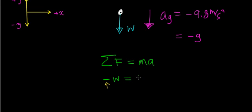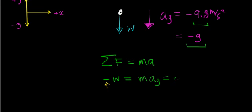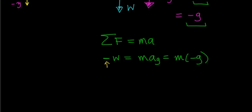This force equals the mass of the object times the acceleration due to gravity. We said the acceleration due to gravity is negative 9.8 meters per second squared, or negative g, so I can rewrite this as mass times negative g. Summarizing these two terms: the weight force is in the downward direction and equals mass times the acceleration due to gravity, which is negative g.